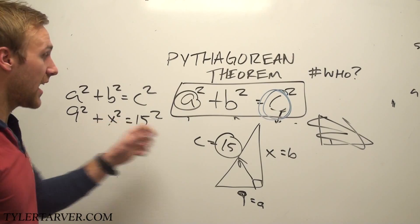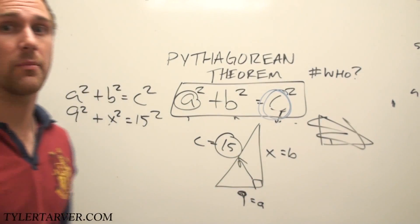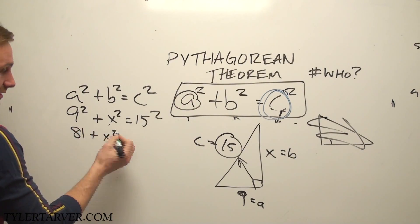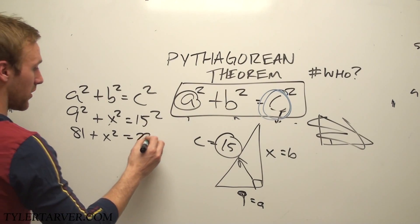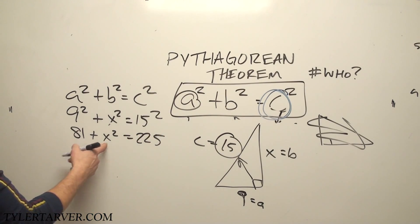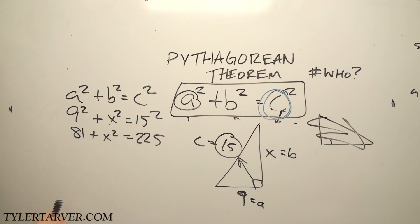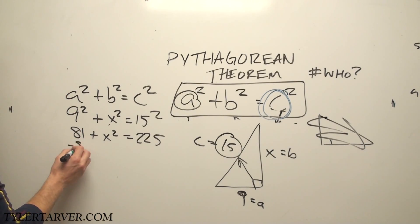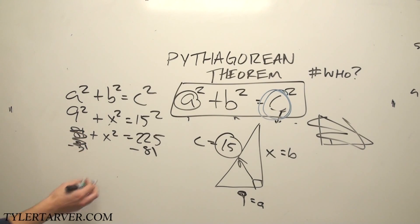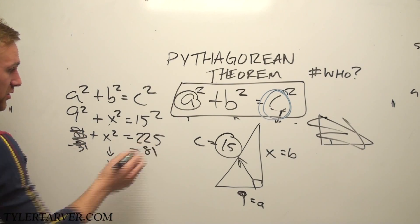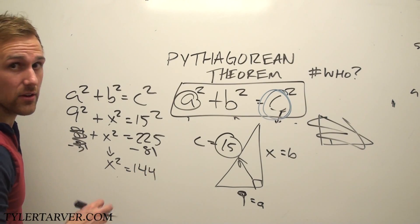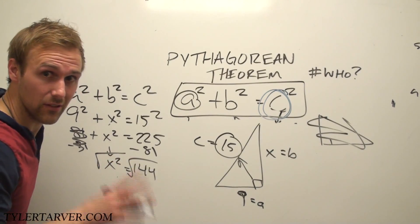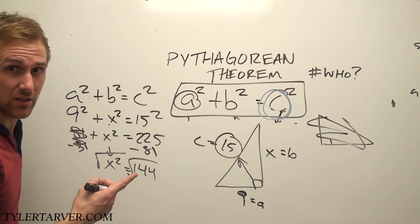We want to solve this to find out what X is. Nine squared is 81, plus X squared — we can't simplify that — equals 225, which is 15 squared. Now we've got to get X squared by itself, just like a regular multi-step equation. 81 goes to the other side, so we subtract it: 81 minus 81 cancels out, X squared stays, and 225 minus 81 is 144. It's all coming together. Square root of both sides.